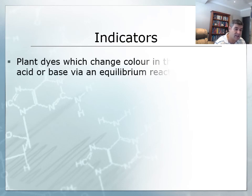But what are indicators? Well, indicators are just plant dyes which change colour in the presence of an acid or base via an equilibrium reaction. So we can bring some of what we understood from the equilibrium topic into this topic to give us a little bit of an idea of what's happening with indicators.